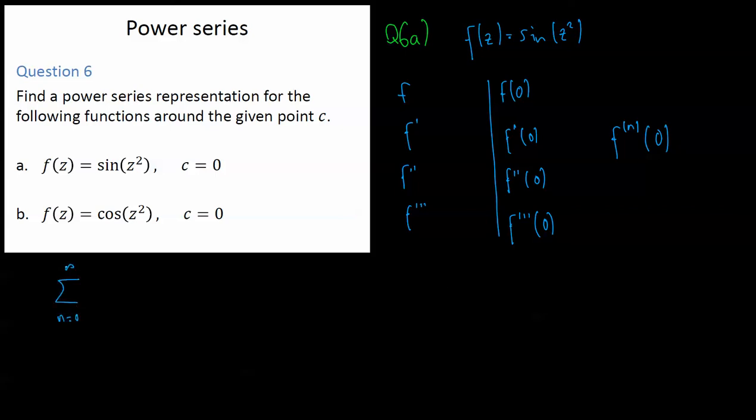N equals zero to infinity, the nth derivative evaluated at the point we're interested in, which is zero, on n factorial, times z minus the point we're interested in, which is zero to the power of n.